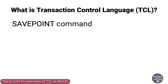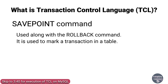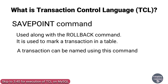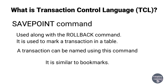The last command of TCL is the SAVEPOINT command. It is used along with the ROLLBACK command and is used to mark a transaction in a table. Suppose you are making changes to a very long table and you want to roll back only to a certain position — this can be achieved using SAVEPOINT. You can mark a transaction with a certain name, and later if you want to roll back to that point, you can do it easily using the transaction's name. SAVEPOINT is helpful when you want to roll back only a small part of the table and not the whole table. In simple words, you can say that SAVEPOINT is a bookmark in SQL.